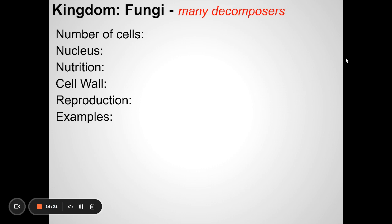Fungi include mushrooms, yeast, and mold. Fungi are mostly multicellular — made of many cells — but there are some that are unicellular. They're more complex cells; they're eukaryotes.